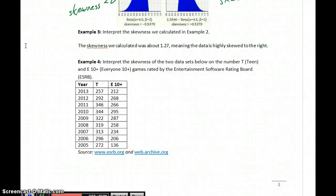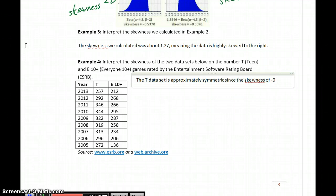So about negative 0.3 and negative 1.15. So again, we want to provide some interpretation of what those results mean. So the T data set in this case is approximately symmetric since the skewness of negative 0.30 is between negative 0.5 and 0.5.